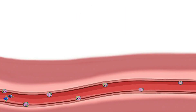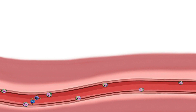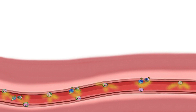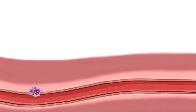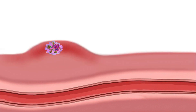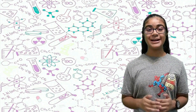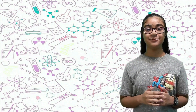The infected cells also pass through the capillaries of the skin and activate mast cells that release histamine chemicals. The histamine kills the infected cells, but it also causes them to swell and create rashes in the skin.